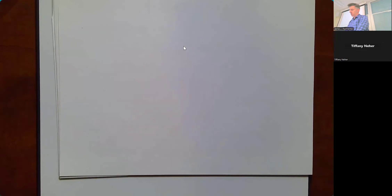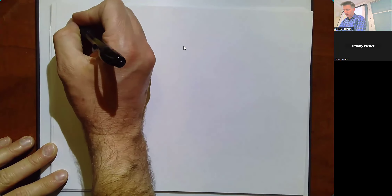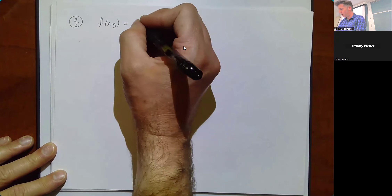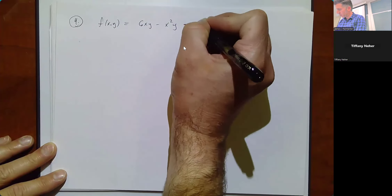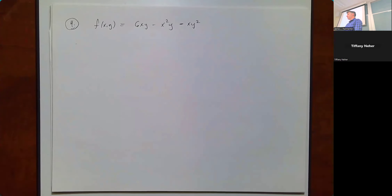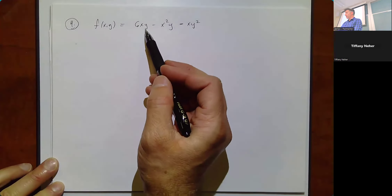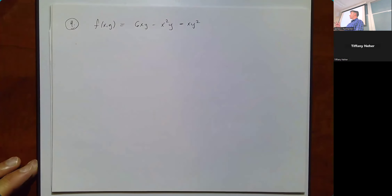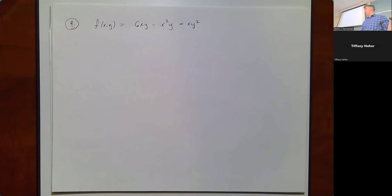Let's look at the last example and then do an application or two. f(x, y) = 6xy - x²y - xy². Something notable about this function: it's symmetric in x and y — if you interchange every x with y and every y with x, you get the same equation. So whenever you have a solution, its partner with x and y swapped is also a solution.